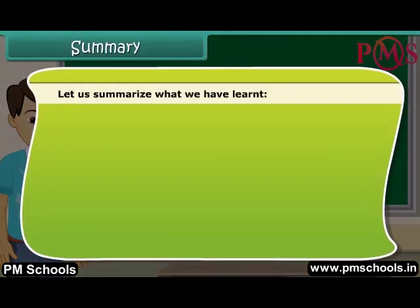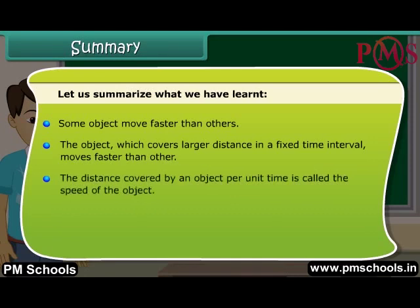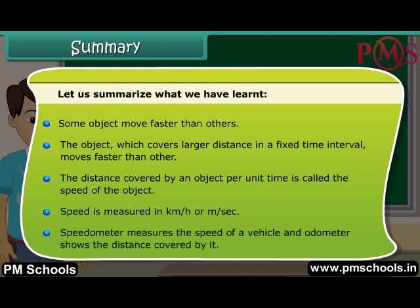Let us summarize what we have learned. Some objects move faster than others. The object which covers a larger distance in a fixed time interval moves faster. The distance covered by an object per unit time is called the speed of the object. Speed is measured in kilometer per hour or meter per second. The speedometer measures the speed of a vehicle and the odometer shows the distance covered by it.